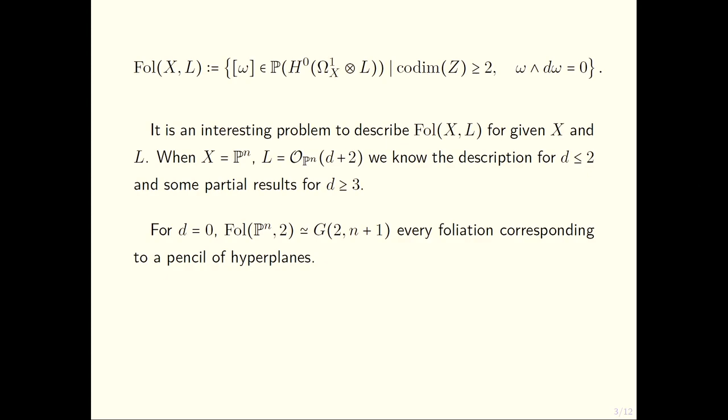For us the most interesting thing will be the simplest case, the degree zero case. When d=0, Fol(ℙⁿ,2) = G(2,n+1), every foliation corresponding to a pencil of hyperplanes. The space of foliations is actually projective, it's a Grassmannian of lines on ℙⁿ because you can identify the foliations of degree zero with pencils of hyperplanes.